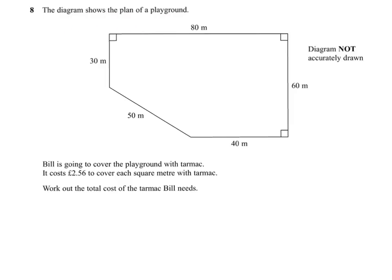The diagram shows the plan of a playground. Bill is going to cover this playground with tarmac for £2.56 per square metre. We've got to work out the total cost of the tarmac Bill needs.